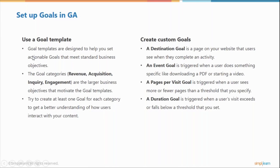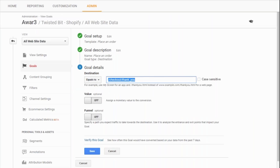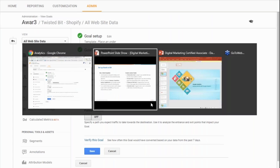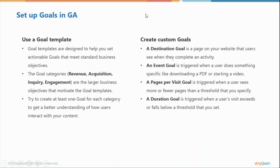There are different goal categories: revenue, acquisition, inquiry, and engagement. A destination goal — like the one successfully set up — basically tracks what percentage of people on your site successfully land on a specific destination page. I know from the architecture of the website that the thank-you page is the destination for those who successfully complete a purchase. So that is the goal being tracked.